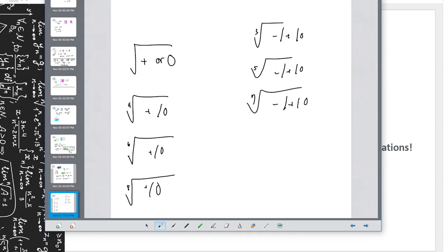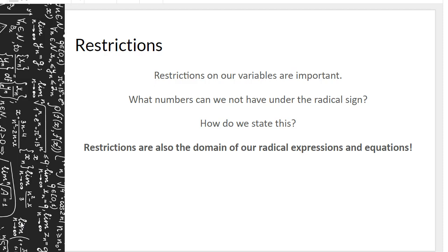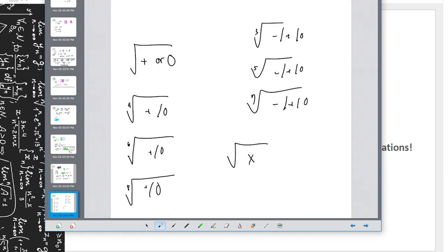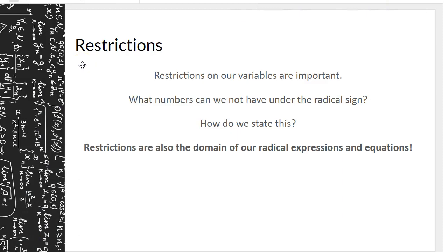Another thing to keep in mind is that we can't be dividing by zero. How do we state restrictions? For root x, we would say x is greater than or equal to 0, x is an element of the reals — meaning 0 can be a solution and any number greater than 0 can be a solution. The restrictions are also the domain of our radical expression and equations. Thinking back to quadratics, our domain is all the possible x values.